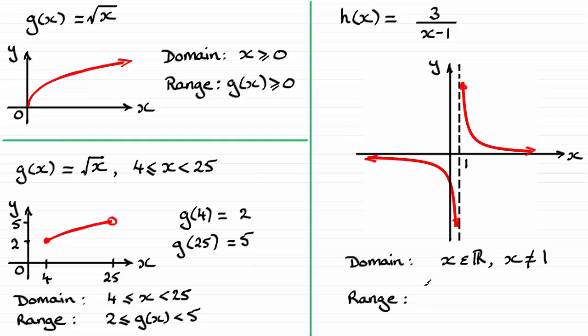And when it comes to the range, we're looking at all the y values that you can get. h of x, if y equals h of x, all these values down here, where you can get all the y values except 0. y never equals 0, because the curve never crosses the x axis. So for the range, we have h of x. h of x is any real value, so we can say that it's any real value, except h of x does not equal 0.